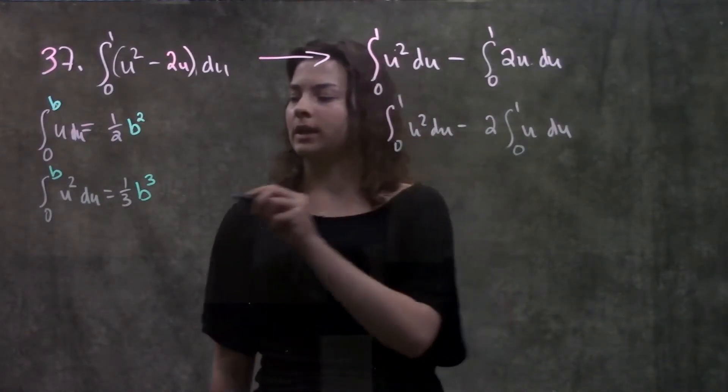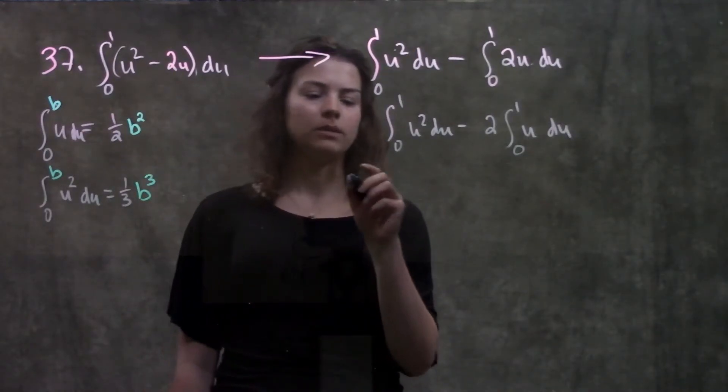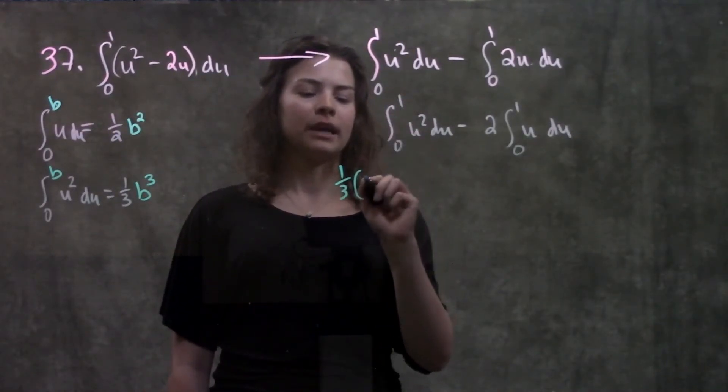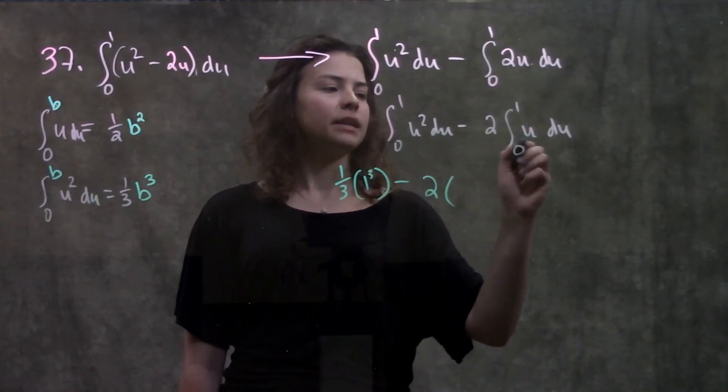So for this first part here, we see that u squared becomes 1 third times whatever this number is cubed. So this is 1 third times 1 cubed minus, leave the constant out here, times the integral of u just becomes 1 half times 1 squared.